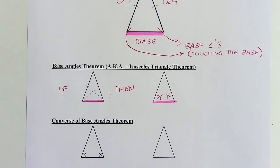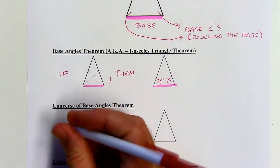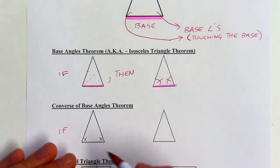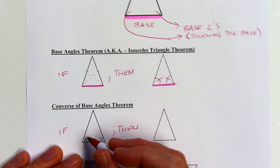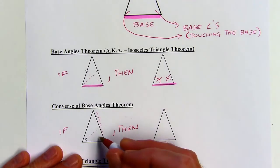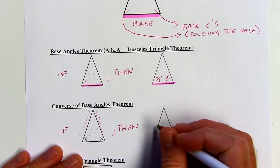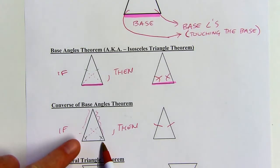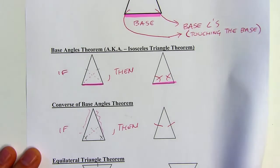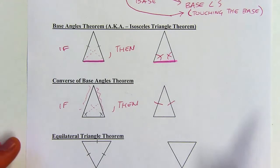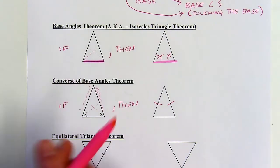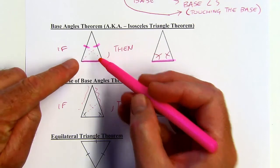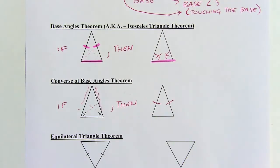The converse of this also works. If you have a triangle where you have two congruent angles, then the sides opposite those two angles are going to be congruent — which means it's an isosceles triangle. It is important to remember which is the original theorem and which is the converse. In the original theorem, you start off with an isosceles triangle. In the converse, you end with an isosceles triangle.